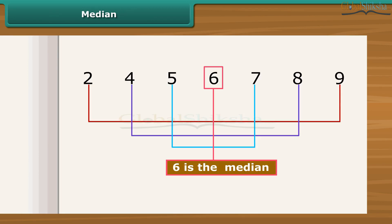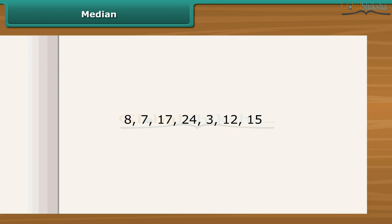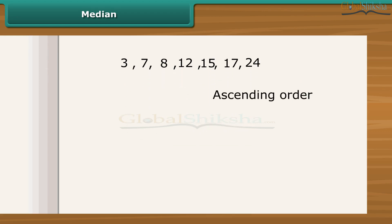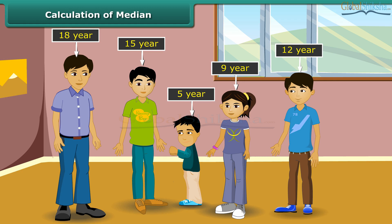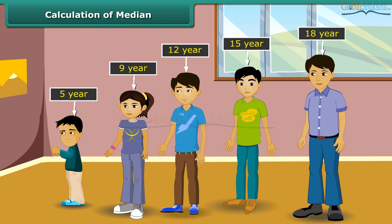Median is the value which lies in the middle of a group of numbers that have been arranged in order by size. Let us find the median of these numbers. Firstly, we need to put the numbers either in ascending or descending order. You can see the middle number is 12 — it has three numbers to its right and three numbers to its left, so the median is 12. The Goyangar family has five children, aged 9, 12, 5, 18 and 15. What is the age of the middle child? First, order the children's ages from least to greatest. The age of the middle child is the middlemost number in the data set, which is 12. Likewise, you can find out the median of various data.